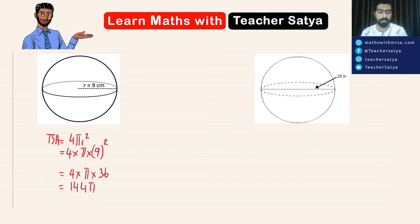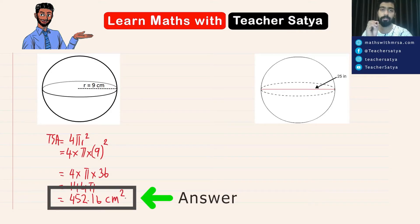Now if we take the value of π as 3.14 and multiply by 144, we would have 452.16 cm². Keep in mind the unit for any part of area would be square unit. Now let's get to one more question.